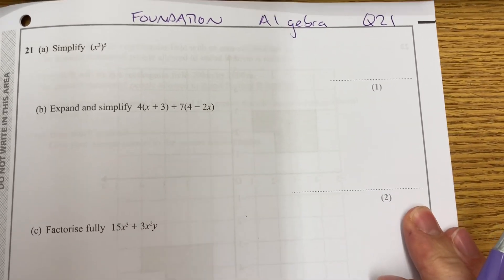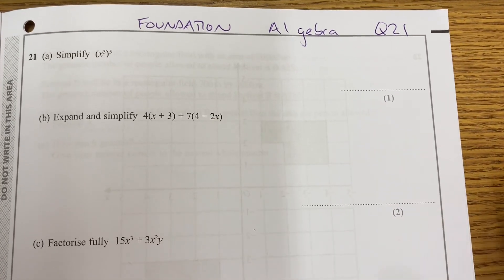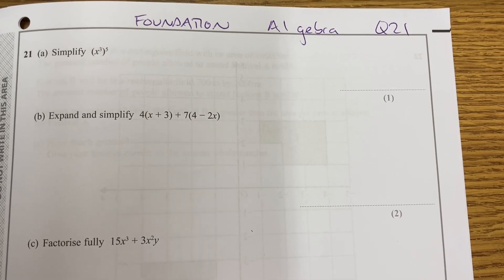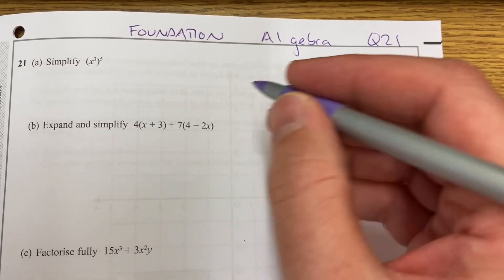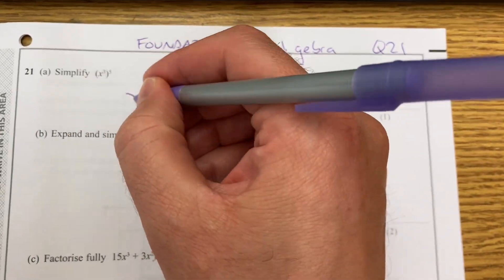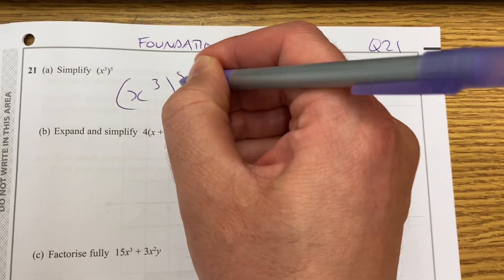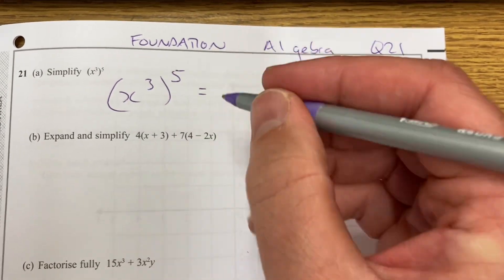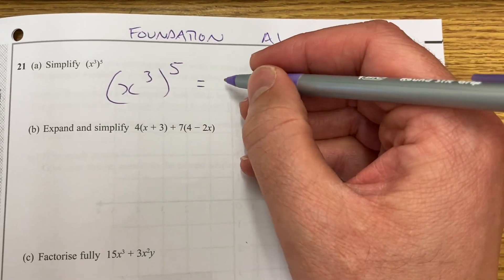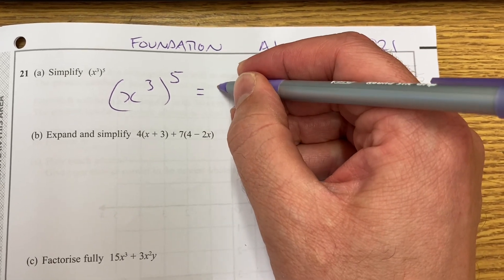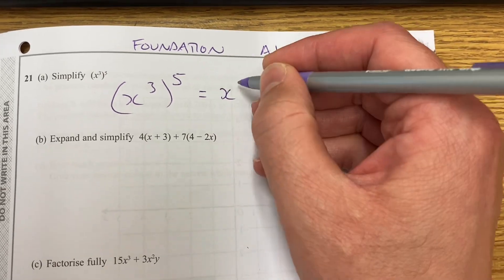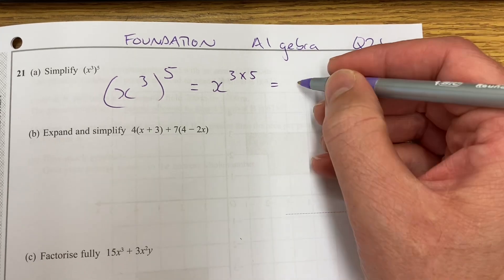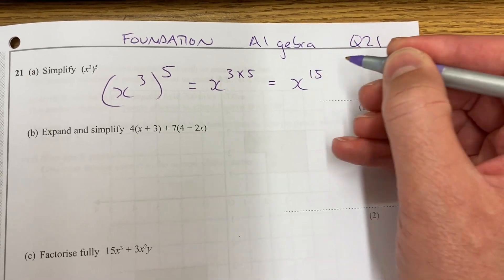Hello and welcome to Martin Maths. We're doing some foundation exams and looking at question 21 from a paper. This question is about algebra. We have to simplify x cubed raised to the 5. When we raise a power to another power, we use the index laws where we multiply those exponents, and that becomes x to the 15.